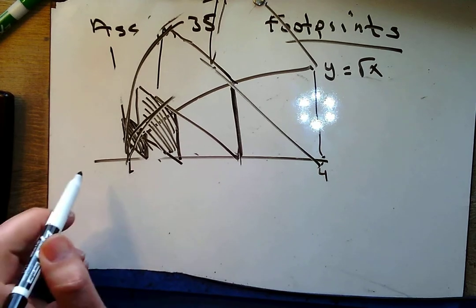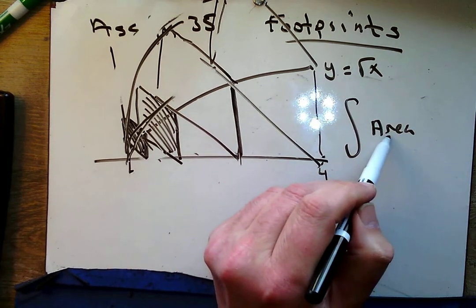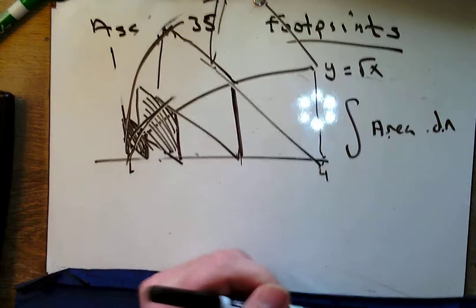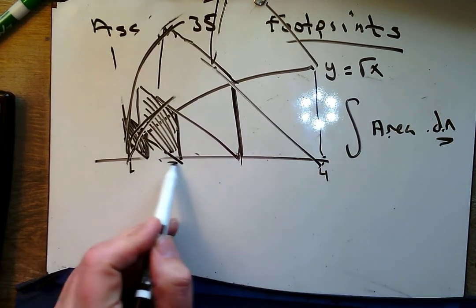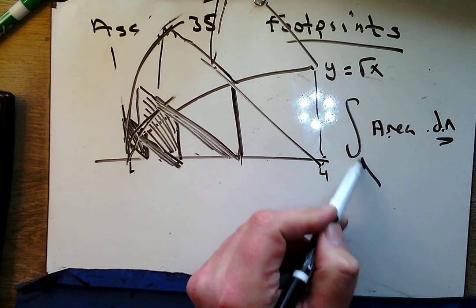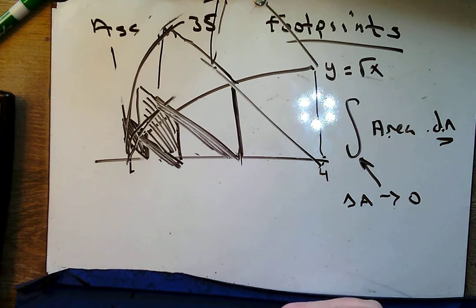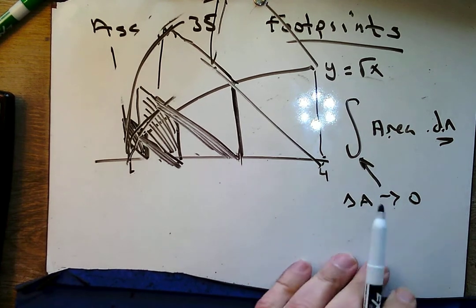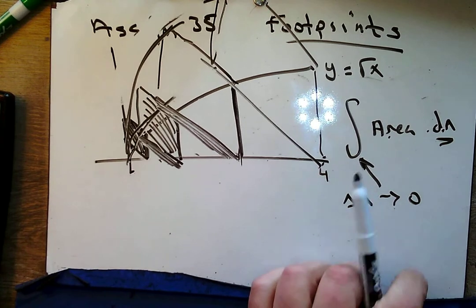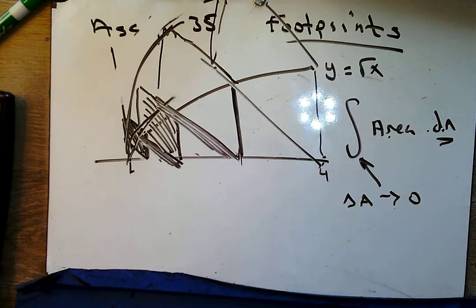We can always think about volumes as integrating area. Think about it — this is like feet squared times feet, and I get feet to the third. This dA is the thickness of each of these squares. But remember with the integral, that's saying that our change in A is heading towards zero, or the number of squares you're going to use is heading towards infinity. Integrate area. You're going to need that reminder — you may even need it on the AP exam. Integrate area to find volume.